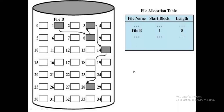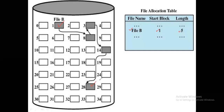Here is file B. The starting location is 1 and its length is 5. This means the blocks are not stored in a continuous manner — they can be stored anywhere. The starting location is 1, and from 1 the pointer goes to 8, from 8 to 3, from 3 to 14, from 14 to 28. Block 28 is the last block of file B.